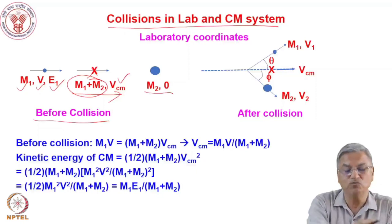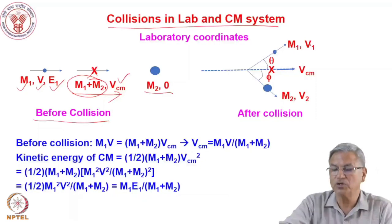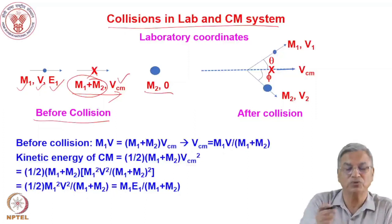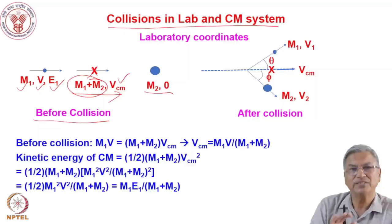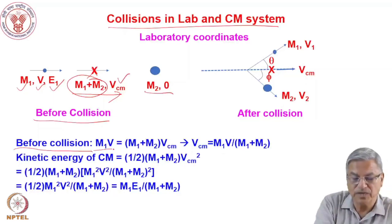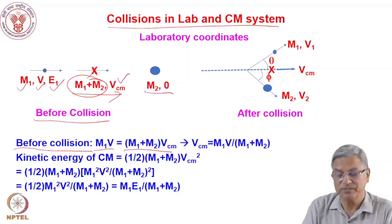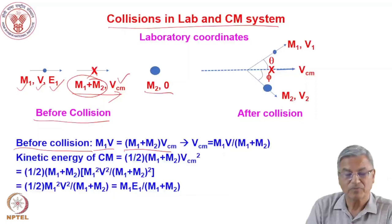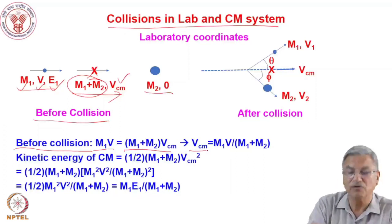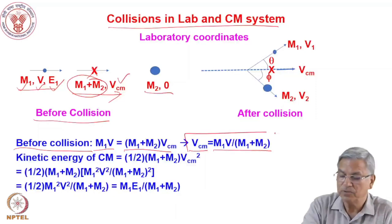In the laboratory, the projectile moves with velocity V toward the stationary target. Before the collision, the momentum is M1·V, and this equals the momentum of the center of mass system: (M1 + M2)·VCM, by conservation of momentum. Therefore VCM = M1·V / (M1 + M2). This is an important relationship we will use subsequently.